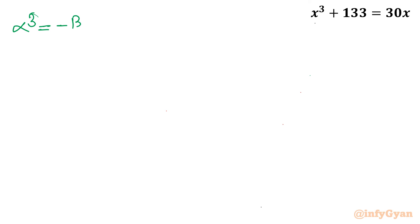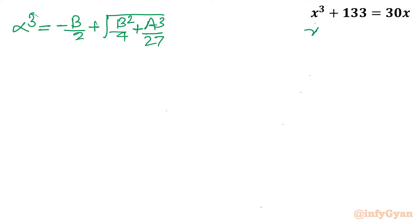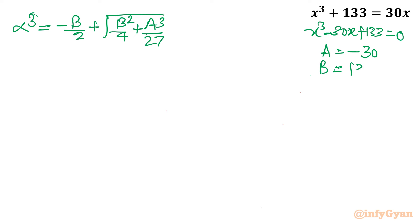For beta cubed we use the same formula but with the minus sign: minus b over 2 minus the square root of b squared over 4 plus a cubed over 27. Putting in the values, beta cubed equals minus 125. So the cube root gives beta equals minus 5.